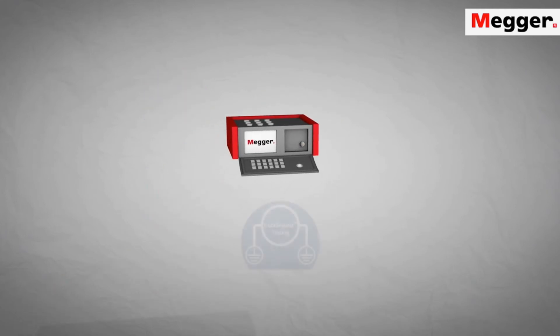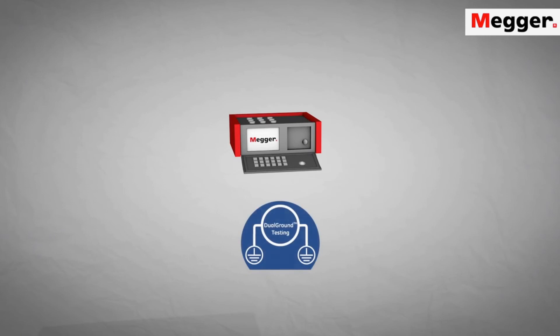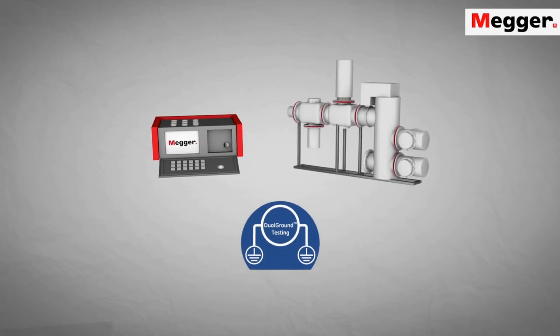With the TM1800 and the dual ground method, you can also time gas insulated switch gear and generator circuit breakers without removing ground connections.